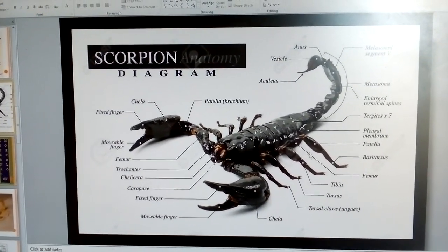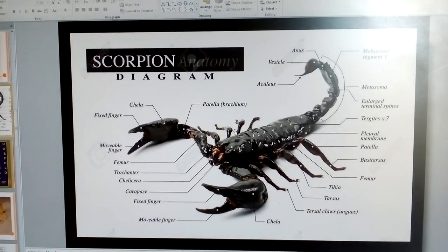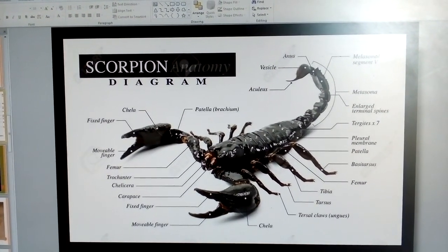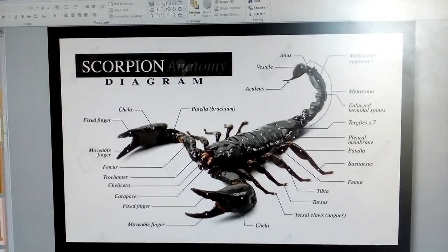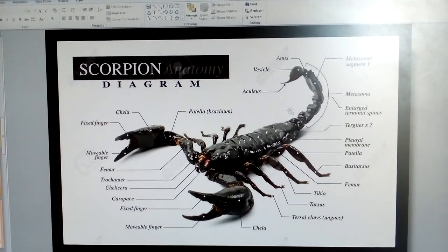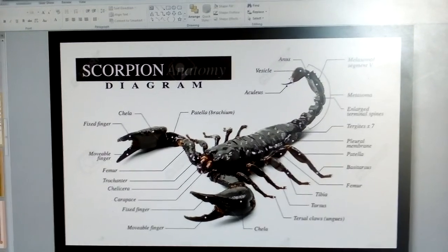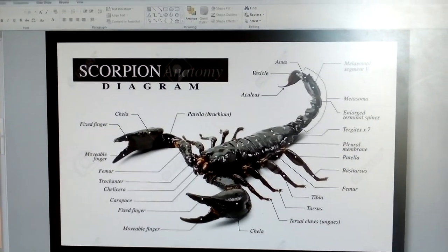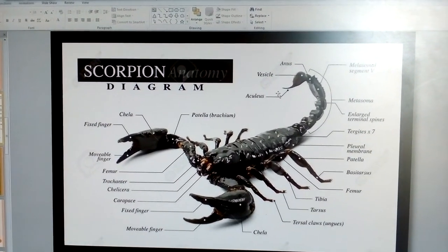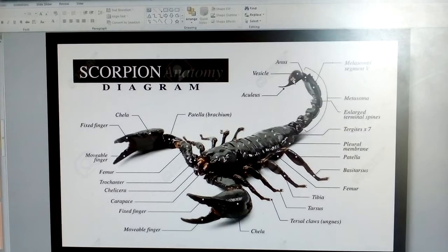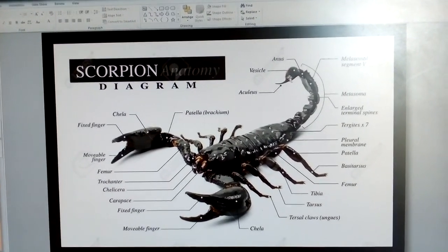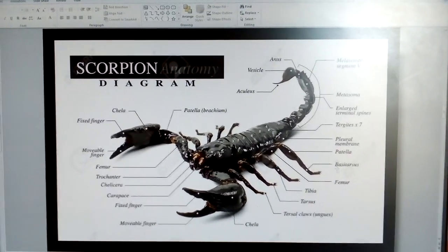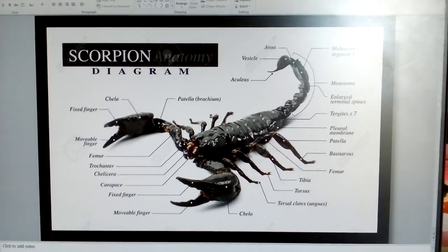The diagram shows four walking legs, the prosoma with seven segments, and the post-abdomen in five segments. The last part is the anus and the telson. These are the main anatomical parts of the scorpion.